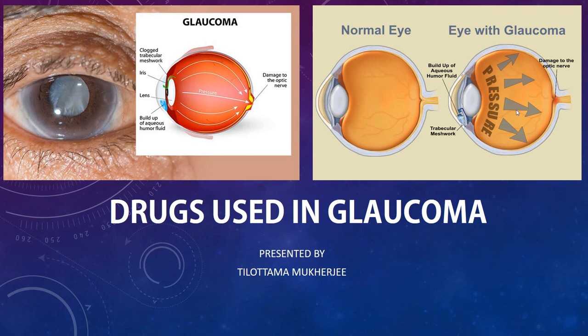From this picture, you can get an idea that glaucoma is due to raised pressure or raised tension — that is the intraocular tension. Glaucoma is mainly due to the raised or increased intraocular tension. The pressure is raised and that results in the damage of optic nerves. Let's quickly look into the other slides for a detailed discussion about glaucoma and the drugs used in glaucoma.